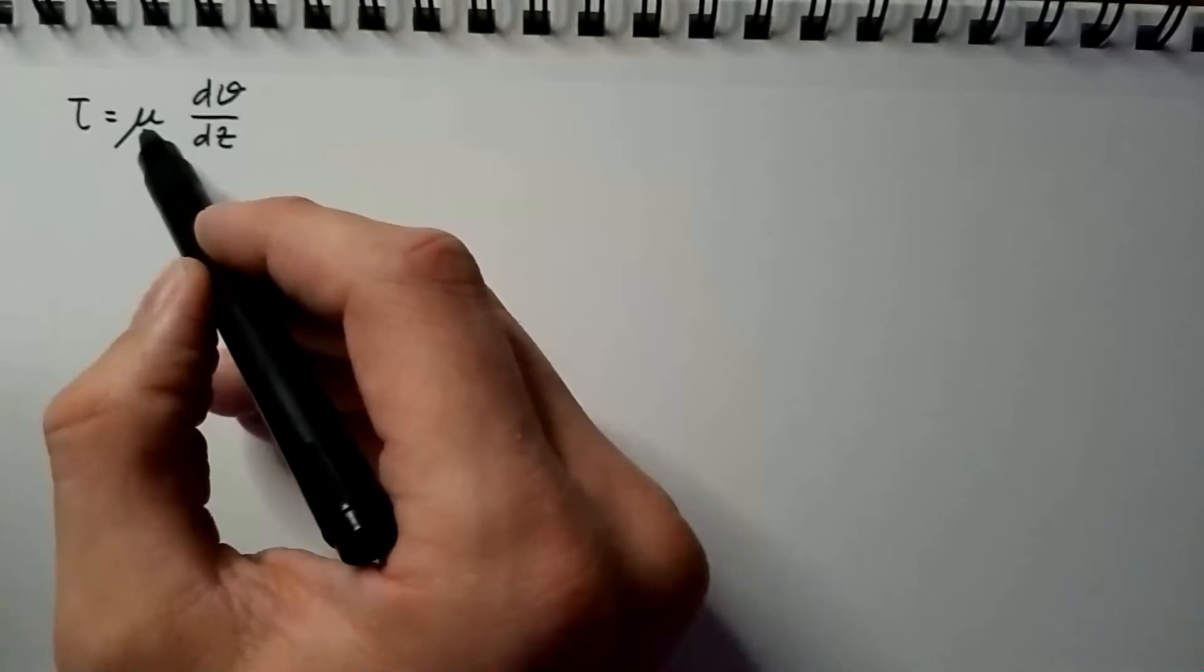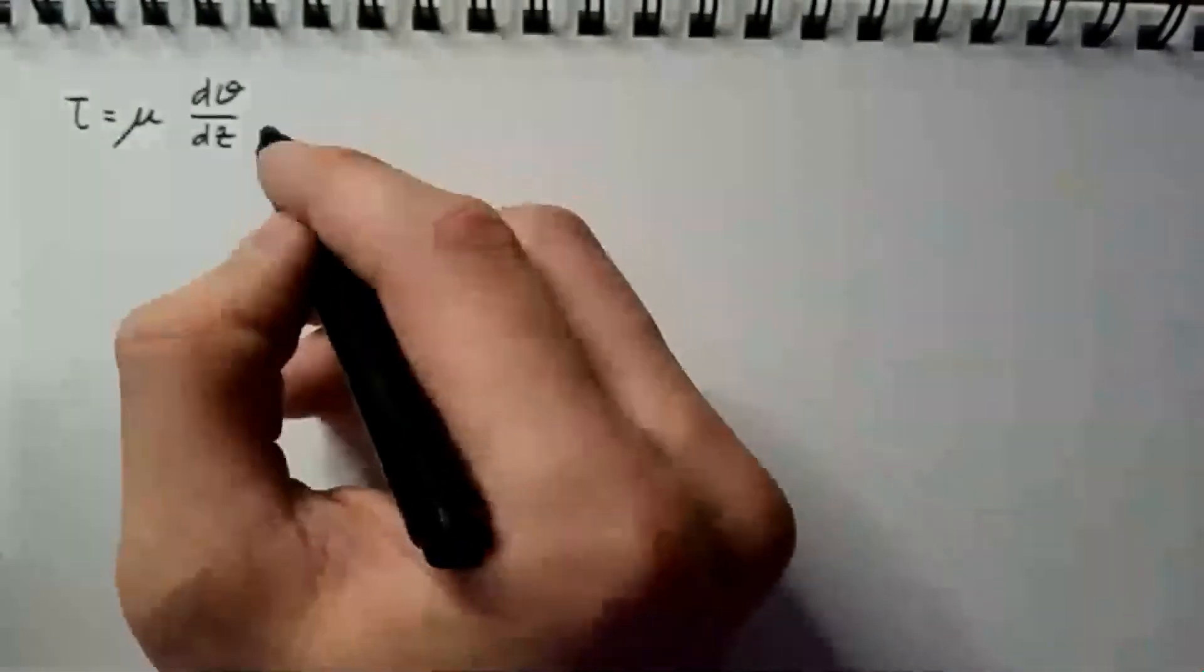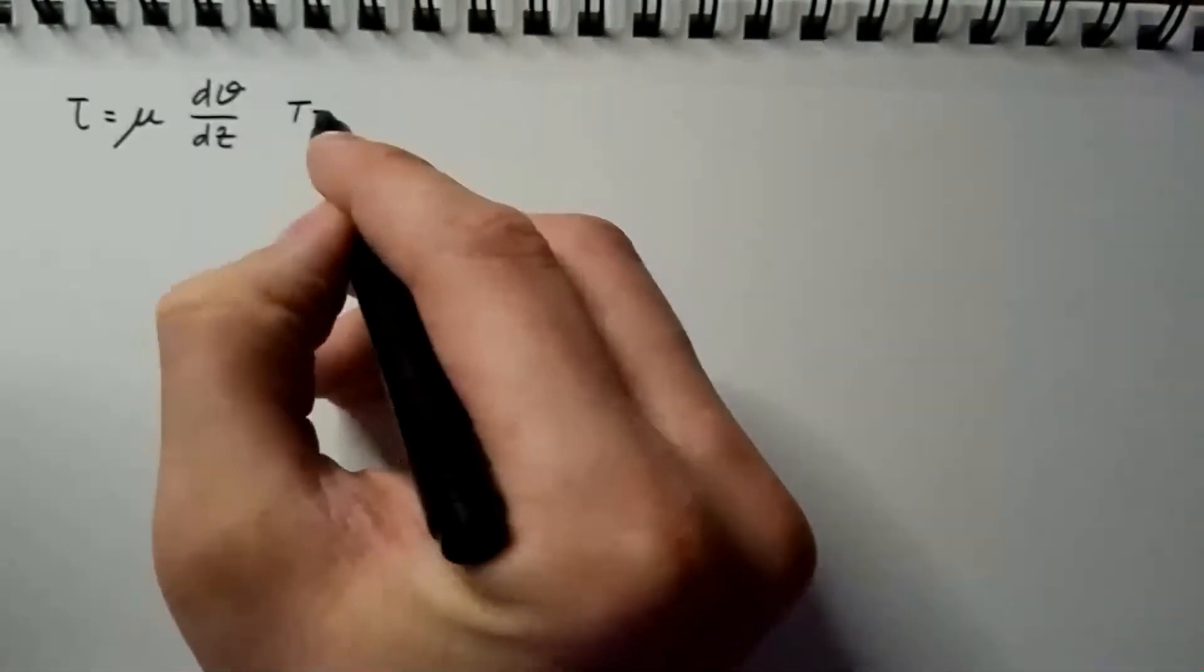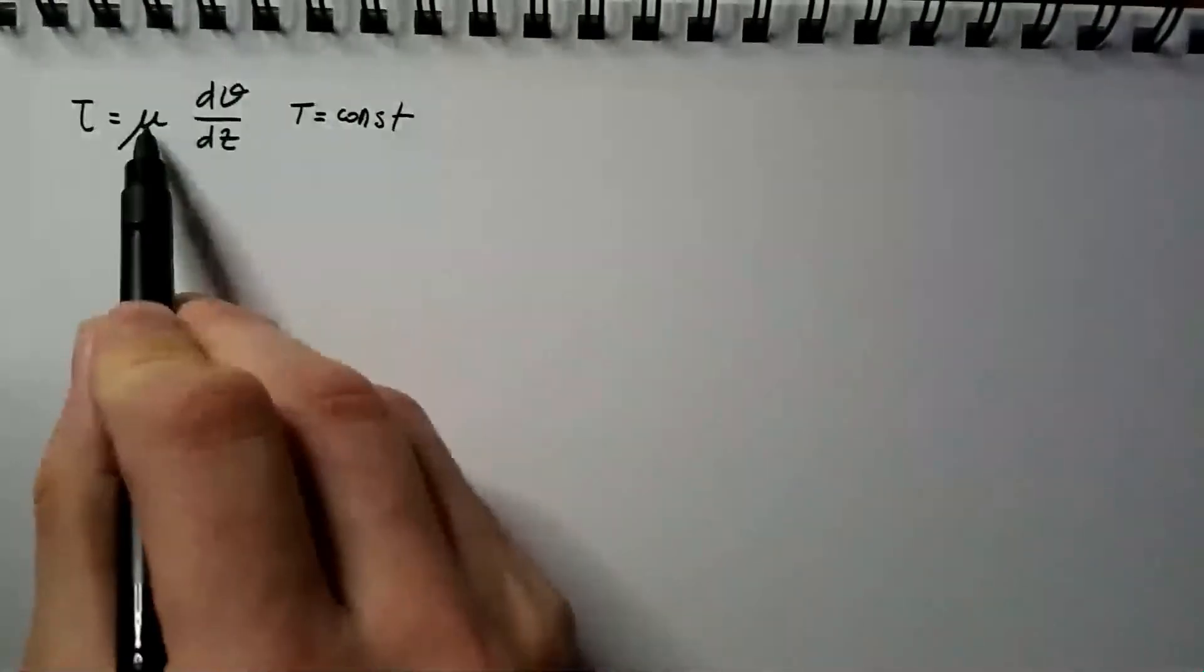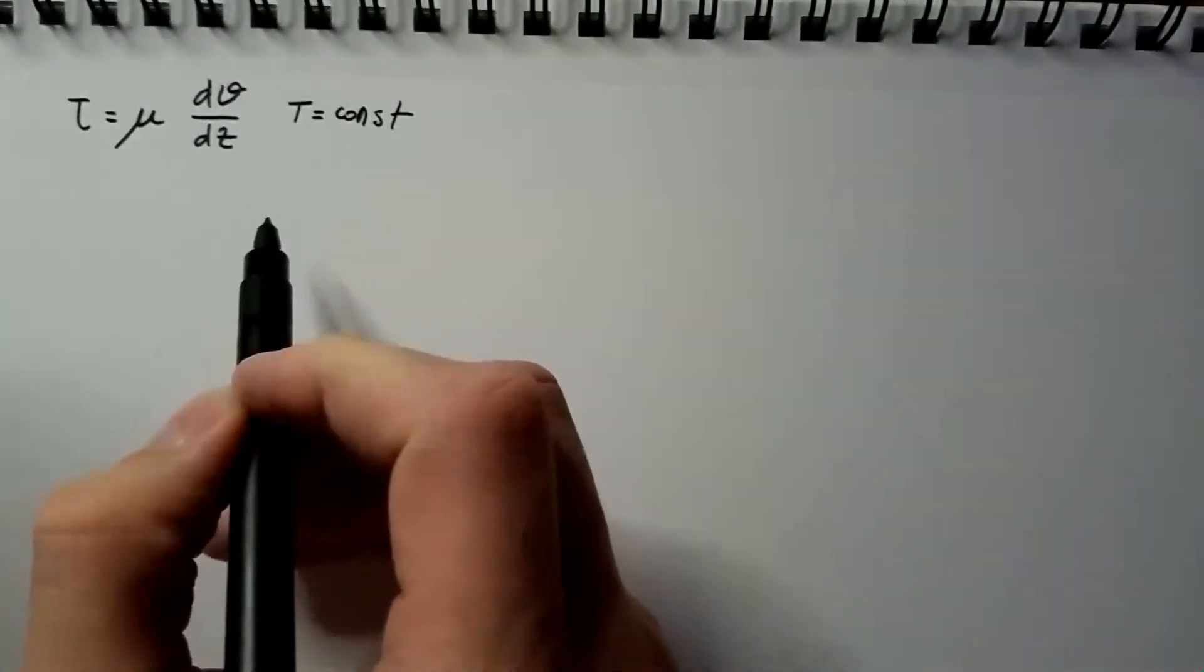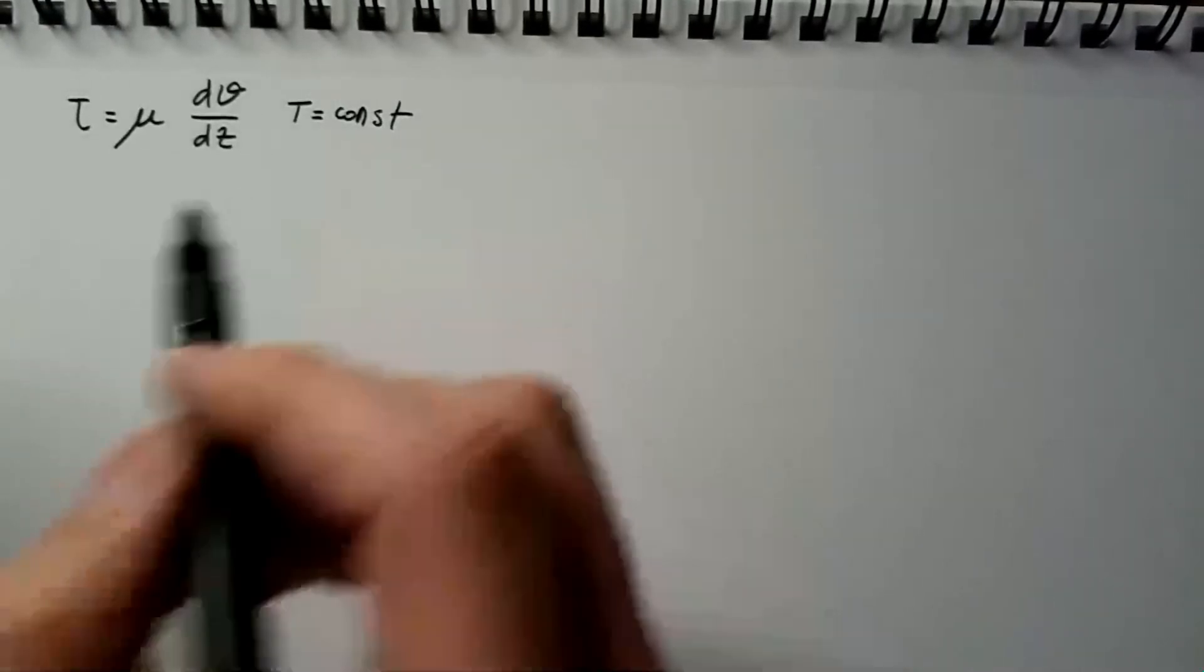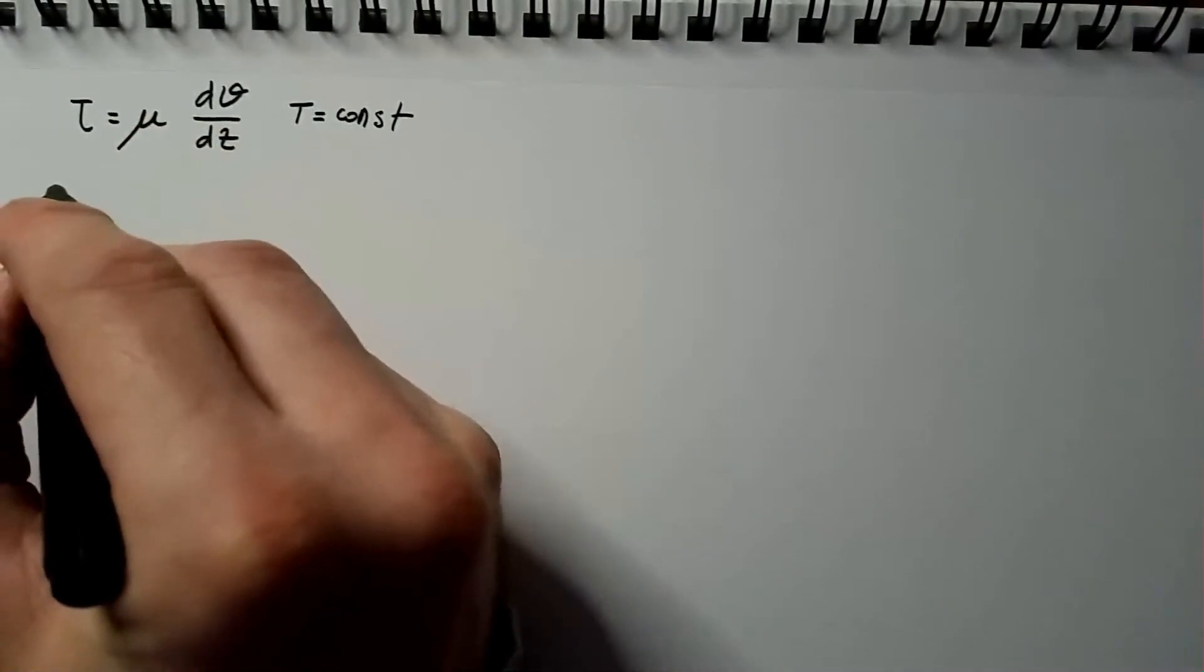We also said that mu is a function of temperature, but throughout this video we will assume that temperature is constant, so there is no dependency of mu on temperature. Now based on the behavior of mu, we distinguish between three different types of fluids.